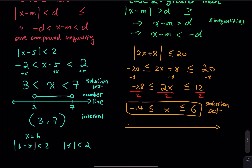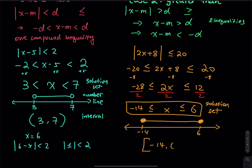On the number line, draw a straight line, mark negative 14 and 6. Since there is an equal sign, use solid circles at both ends and draw a line between them. The interval notation uses square brackets: [negative 14, 6], because there is an equal sign. Square brackets mean x can equal 6 and negative 14.